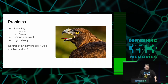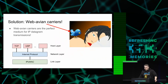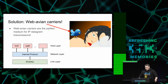IP over avian carriers is not really up to the task for today's challenges. We have limited bandwidth, we have high latency. So I was looking for a solution to that problem, and the solution is web avian carriers. I figured out they are the perfect medium for IP datagram transmissions. IP over web avian carrier is a link layer protocol that fits nicely into the stack.